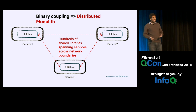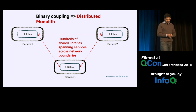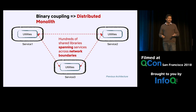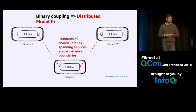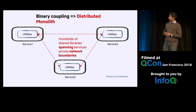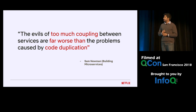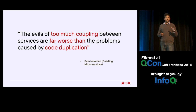A distributed monolith is worse than a monolith because it had all the ill effects of the monolith, on top of having to own and operate each of these microservices separately. Sam Newman captures this very well in his book Building Microservices — he says the evils of too much coupling between services are far worse than the problems caused by code duplication.